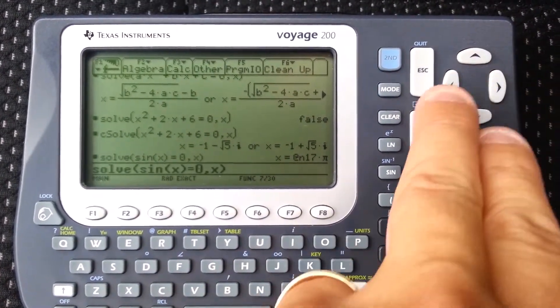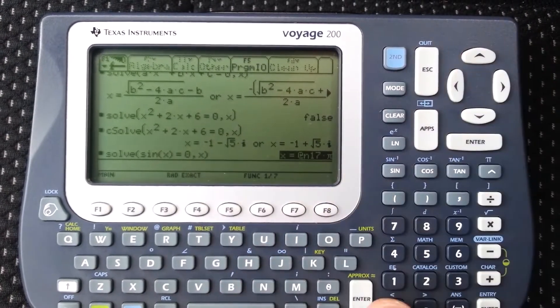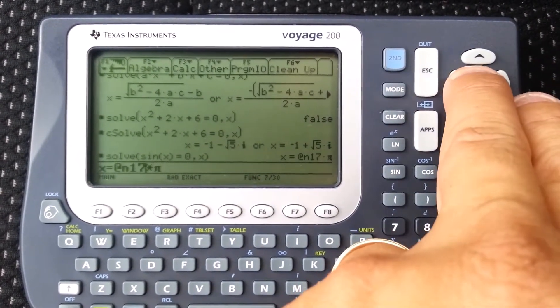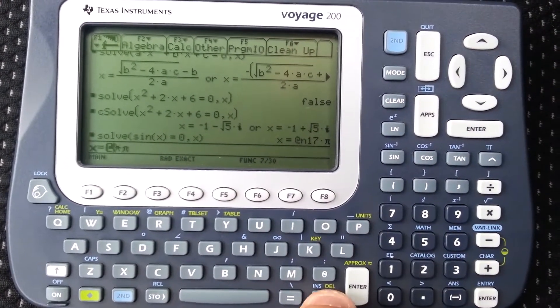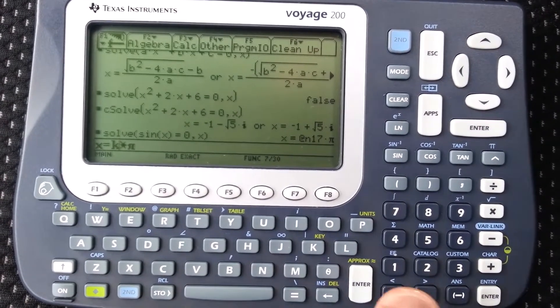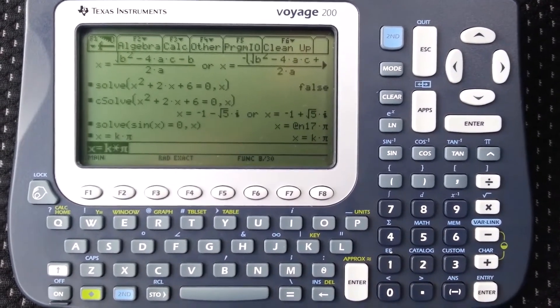So it's basically just saying that sine of x equals zero when x equals k times pi, where k is just some generic constant.